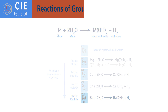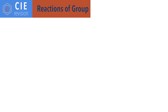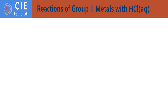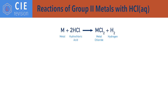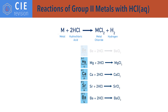Group 2 metals react with dilute hydrochloric acid to form metal chlorides and hydrogen gas, with a general reaction: M + 2HCl → MCl₂ + H₂. As the group 2 metals become more reactive going down the group, the metals react more vigorously and hydrogen gas is produced at a faster rate.